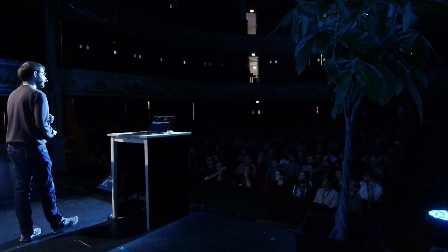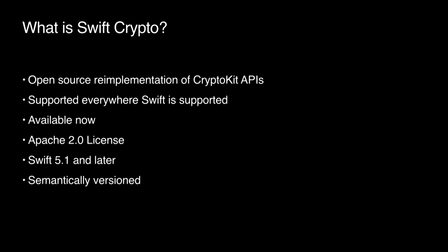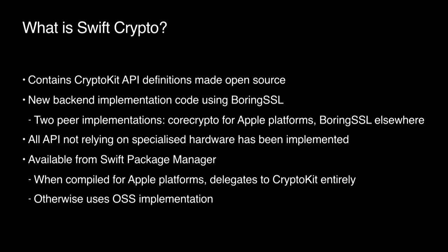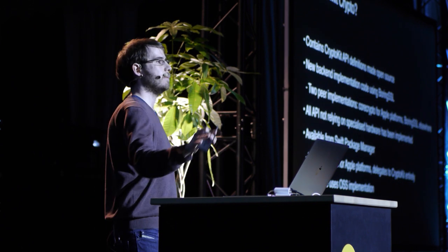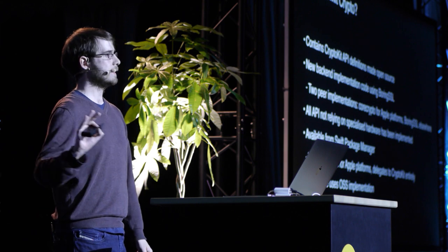Swift Crypto is a fully open source reimplementation of the CryptoKit APIs that is supported absolutely everywhere that Swift is. It is available right now, licensed permissively under the Apache 2 license, available for Swift 5.1 and later, using Swift Package Manager in a package that is semantically versioned. The package contains two major chunks of code. The first are the definitions of the public API of CryptoKit — these files are the original versions from CryptoKit itself and have been made open source as part of Swift Crypto.